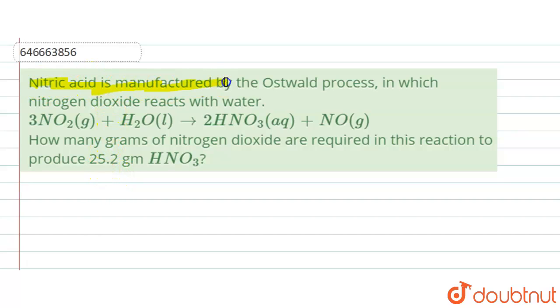The question is: nitric acid is manufactured by the Ostwald process, in which nitrogen dioxide reacts with water. We are given the reaction. How many grams of nitrogen dioxide are required in this reaction to produce 25.2 grams of HNO3?